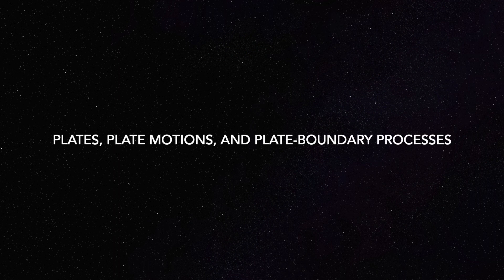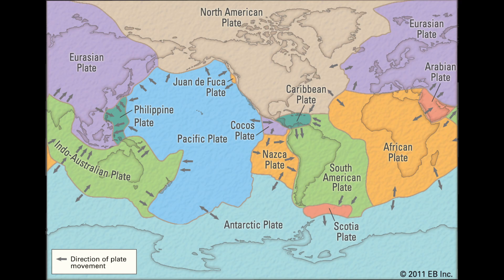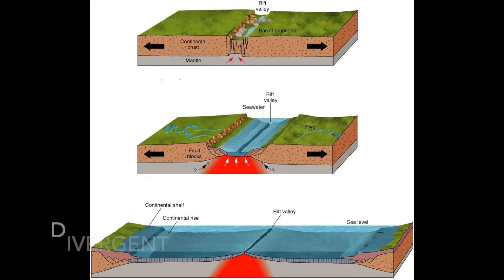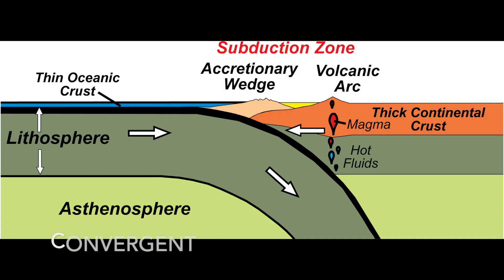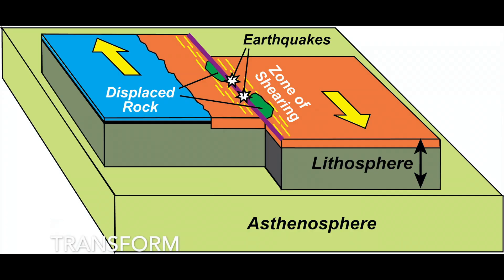Plates, plate motions, and plate boundary processes. Earth's lithosphere is made up of over 20 plates that are moving in different directions at rates of between 1 centimeter per year and 10 centimeters per year. The three types of plate boundaries are divergent — plates moving apart and new crust forming — convergent — plates moving together and one being subducted — and transform — plates moving side by side.